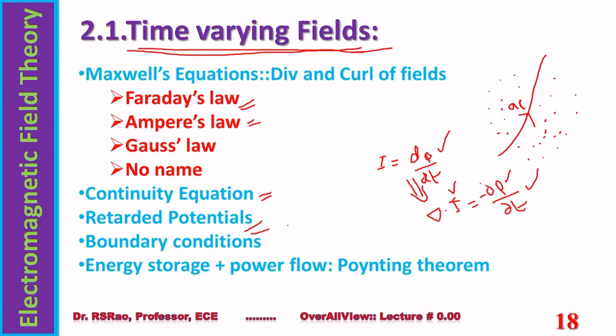Then we move to retarded potentials. The concept of potential is the same as when electric scalar potential is introduced in electrostatics and magnetic vector potential is introduced in steady magnetic fields. Retarded potentials are potential functions designed to work for time varying fields. The expressions of these potentials involve a certain amount of time delay, also called retardation — and for this reason they are called retarded potentials.